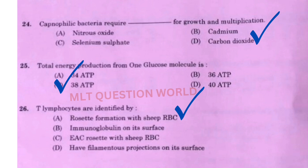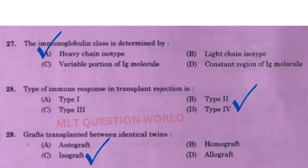Next question: T lymphocytes are identified by? The right answer is option A, rosette formation with sheep RBC. Next one: The immunoglobulin class is determined by option A, heavy chain isotype.